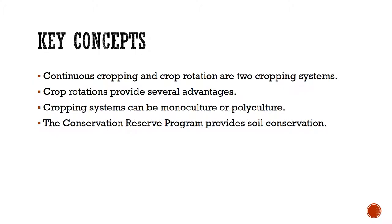Some key concepts. What we're going to talk about in this mini lecture is the difference between continuous cropping and crop rotation and how they're two different types of systems. We'll look at crop rotation and the really awesome advantages that it gives producers. We'll talk about monoculture versus polyculture and how you can grow one or many different types of crops in one field at one time. And then we're going to look at the CRP program that provides some really cool benefits for farmers to use soil conservation.